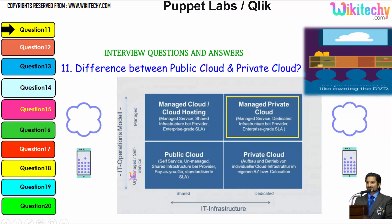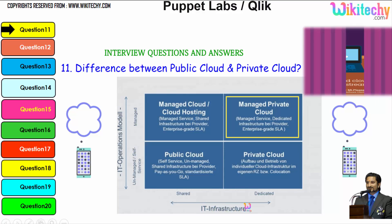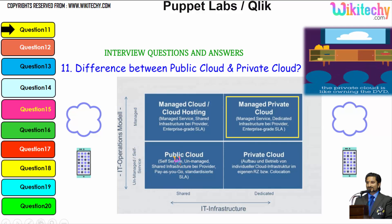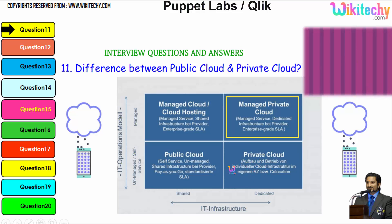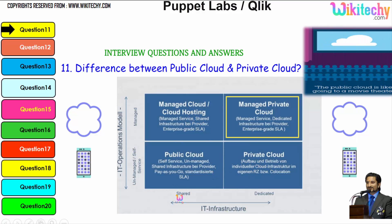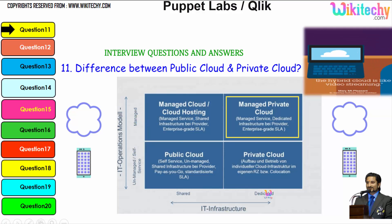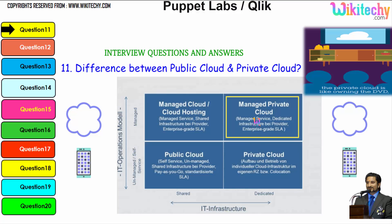Here I have put the IT operations model and the IT infrastructure side by side. Public cloud provides shared and unmanaged services. A dedicated unmanaged service is given by the private cloud. Managed cloud hosting is given by the shared managed cloud. And a managed dedicated service is given by the managed private cloud. This is how you can see the differences between the public cloud and the private cloud.